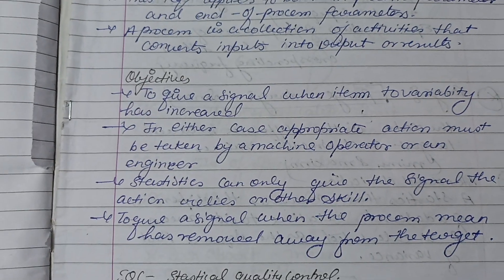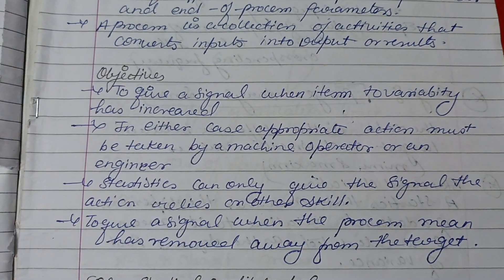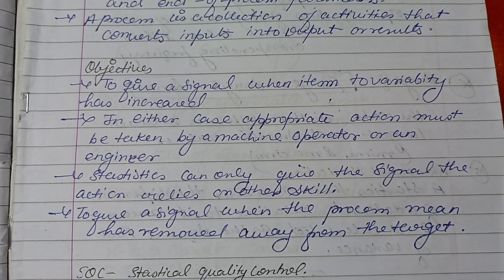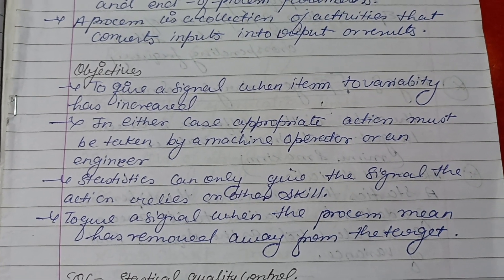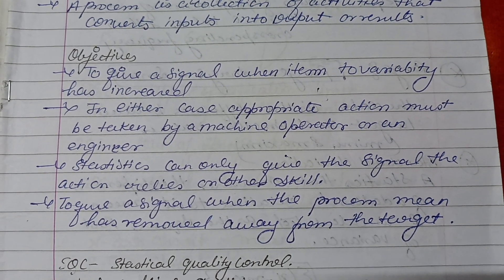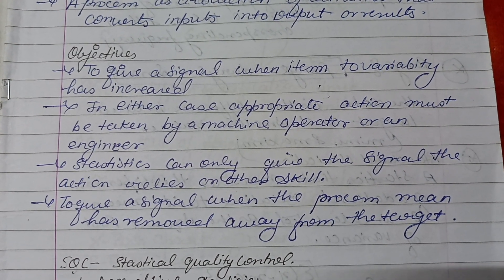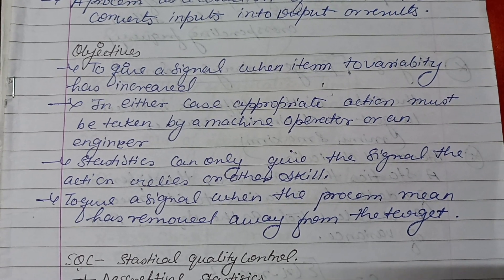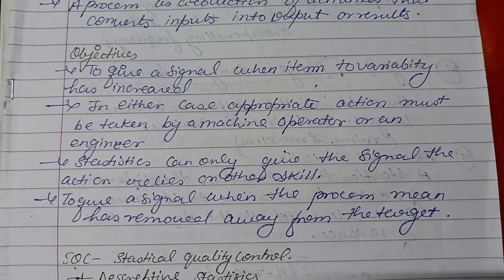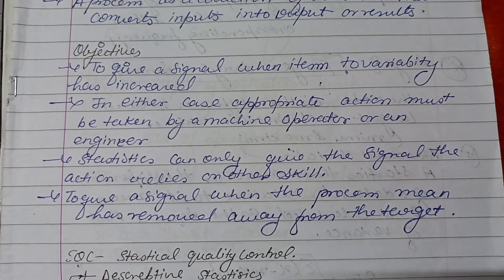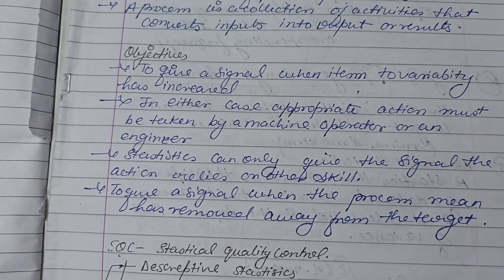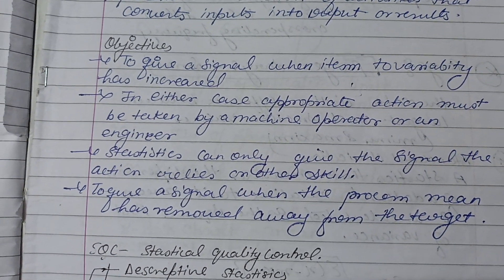Objectives of SPC are to give a signal when variability has increased. In either case, appropriate action must be taken by a machine operator or an engineer. Statistics can only give the signal; the action depends on other skills. Another objective is to give a signal when the process mean has moved away from the target.